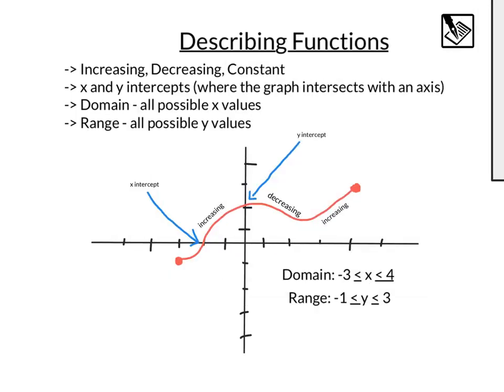Here we have a function that is graphed. We can see from left to right it's increasing, then decreasing, then increasing again. We can see our x intercept is right here at negative two, zero. Our y intercept is right here at zero, two. Looks like a little above two, that's okay.